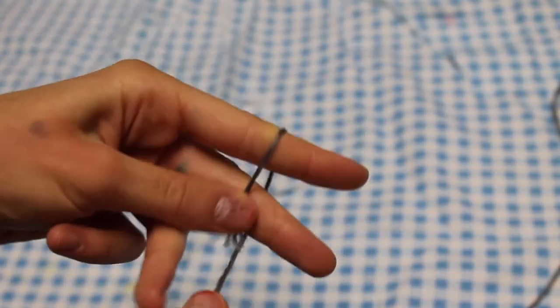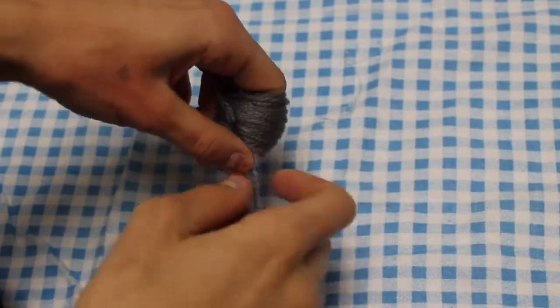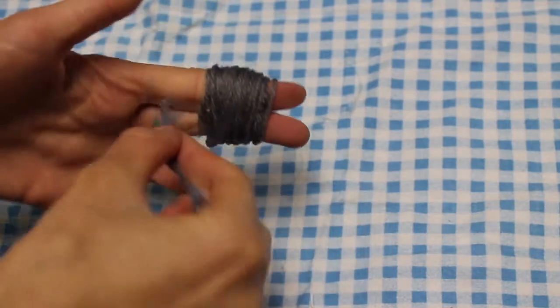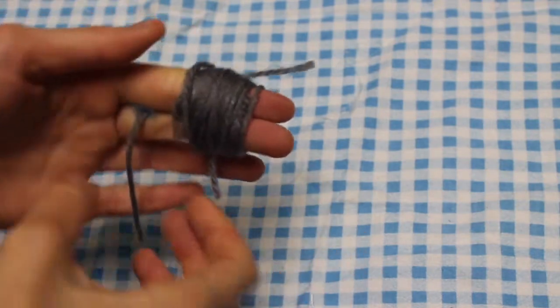You're just going to wrap the string around your fingers. You don't want to do it super tight because then it's going to be hard to feed the string through there. Just do it so your fingers are still kind of alive. Then you're going to take a piece of string and put it through your two fingers, and you're going to tie them together. This is really hard to do by yourself, so if you can get help then you should totally do that because it makes it a lot easier.